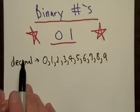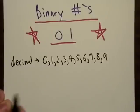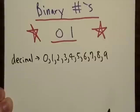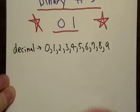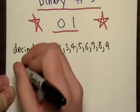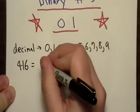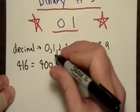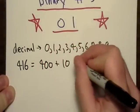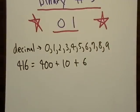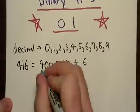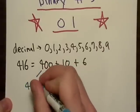Deci is a prefix used to mean 10, or a tenth actually. So basically if we wanted to decode, let's say 416 — that's 400 plus 10 plus 6. And decimal is called base 10, because each one of these numbers is represented by a power of 10.